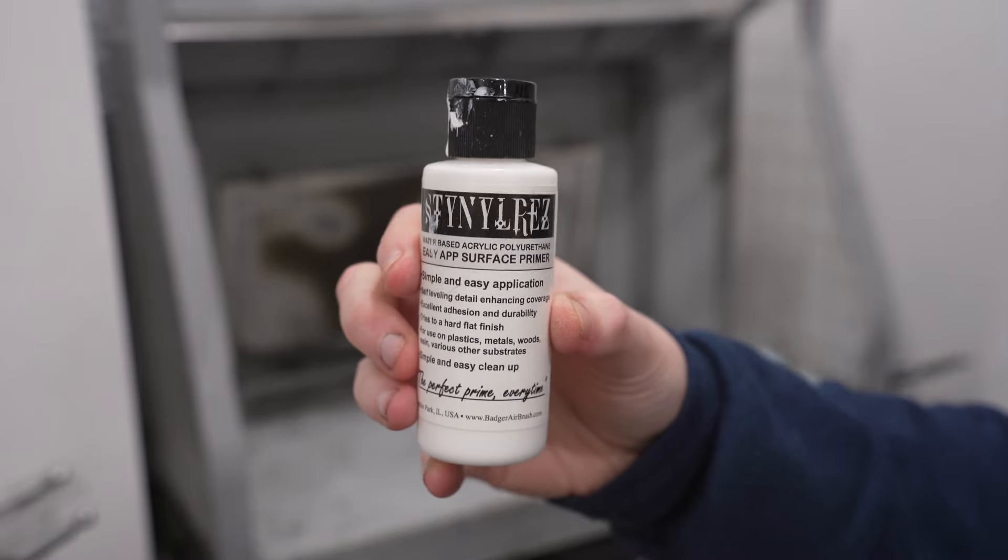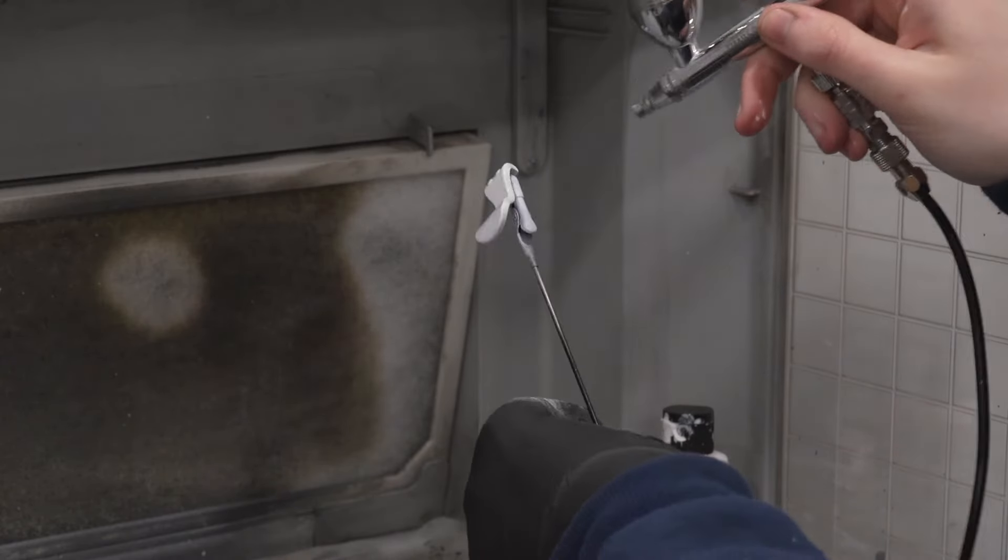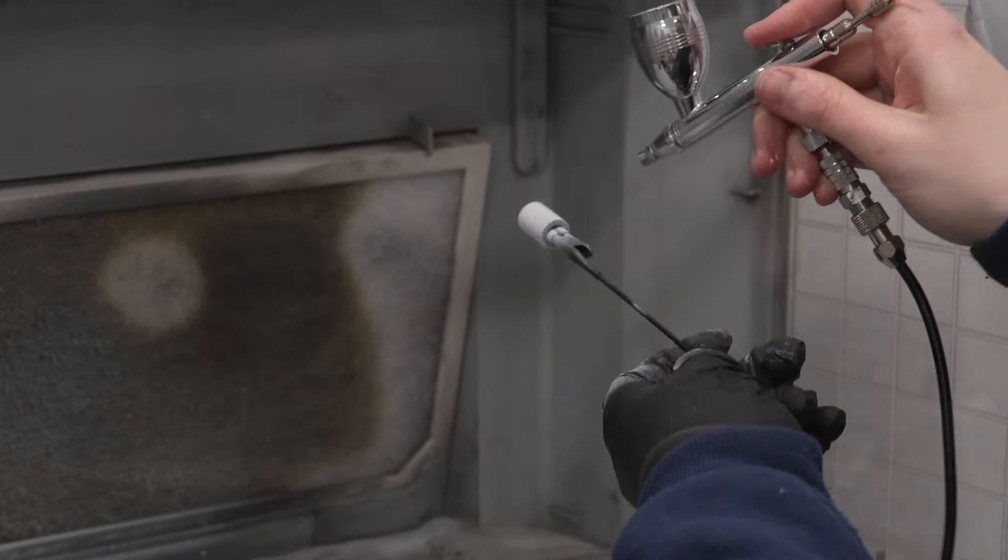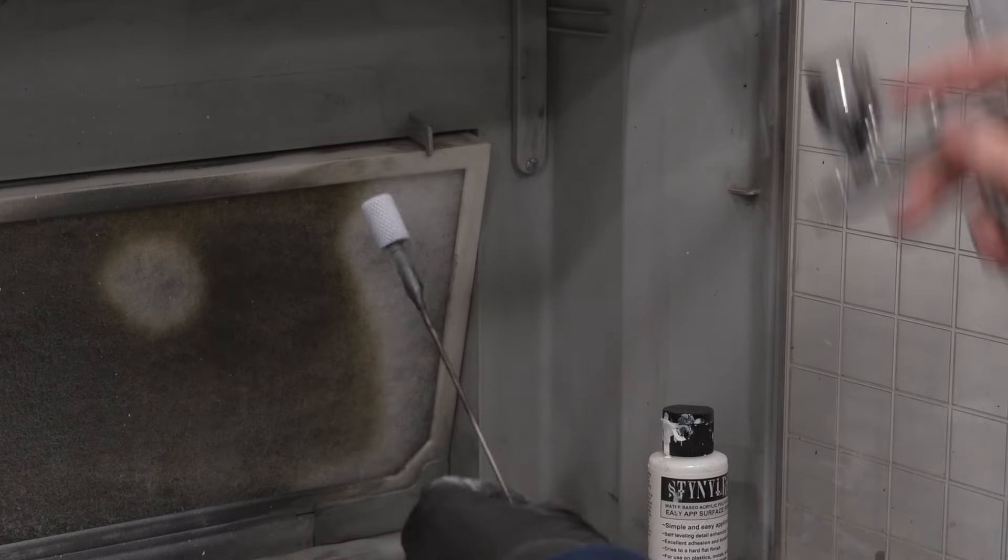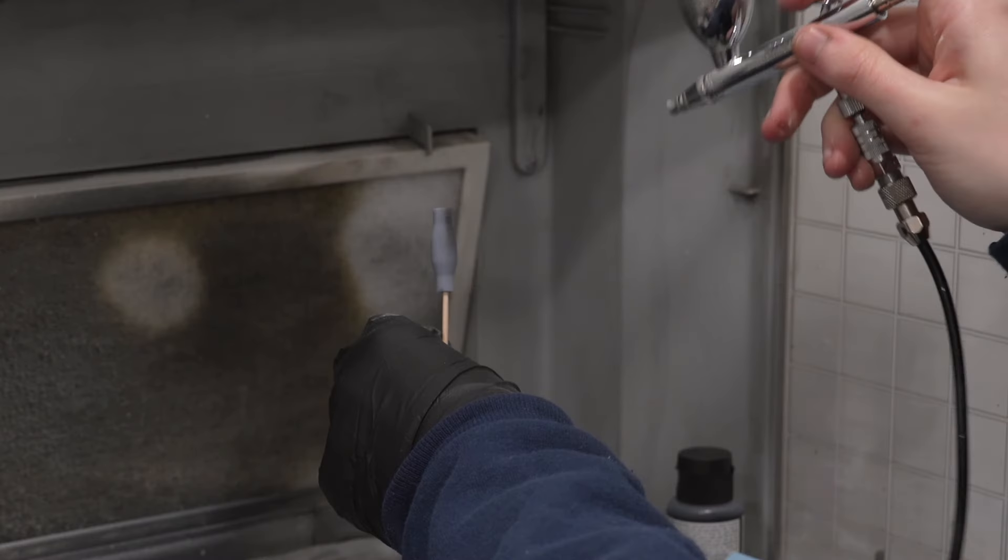As for priming the pieces, I used a white primer on the mouthpiece as well as the mesh sides, since those pieces are actually going to be painted white in the end. It was the easiest way to prime them in white first, and then everything else was primed in a gloss black base.